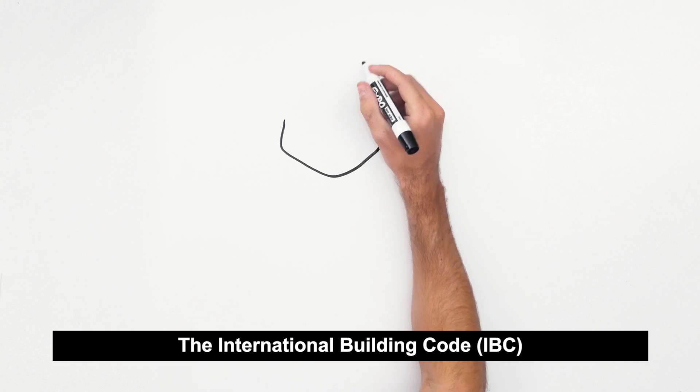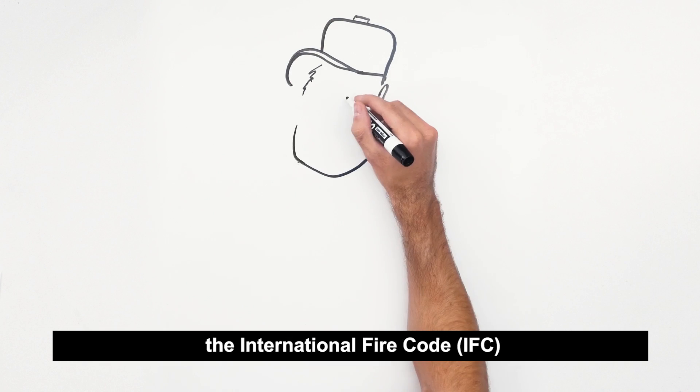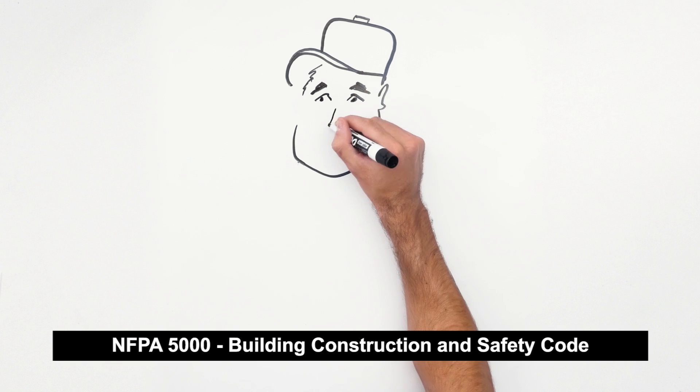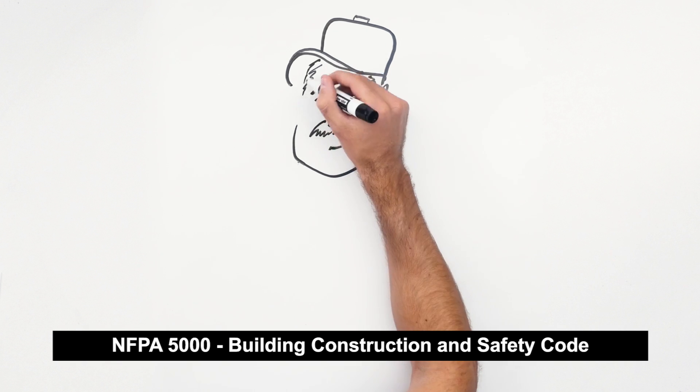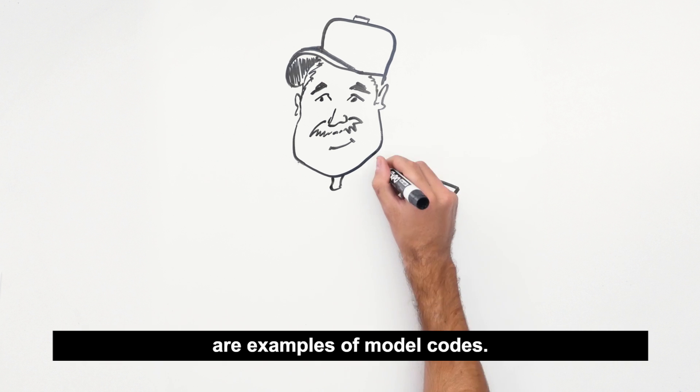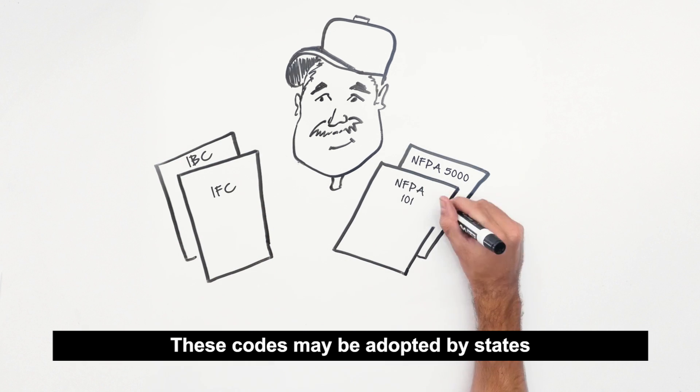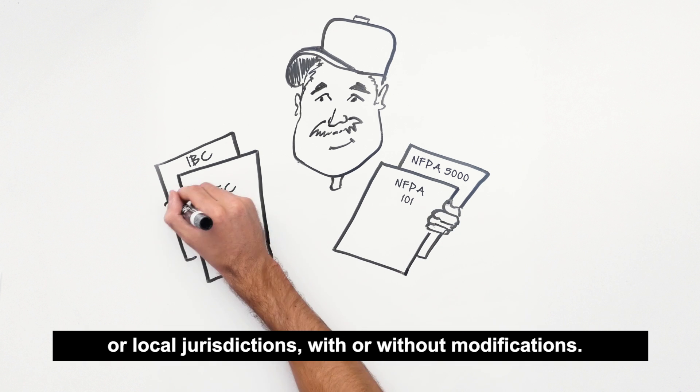The International Building Code (IBC), the International Fire Code (IFC), NFPA 5000 Building Construction and Safety Code, and NFPA 101 the Life Safety Code are examples of model codes. These codes may be adopted by states or local jurisdictions with or without modifications.